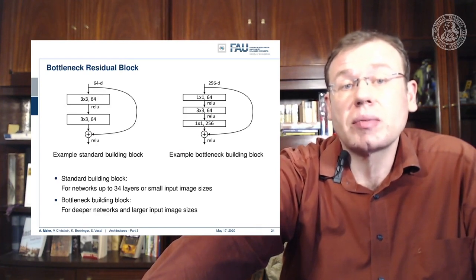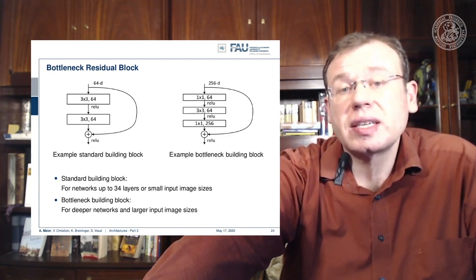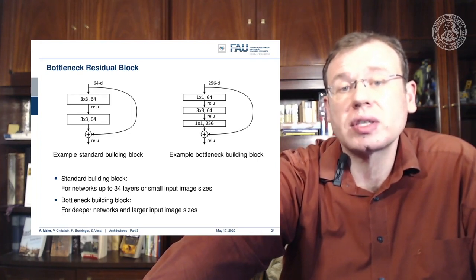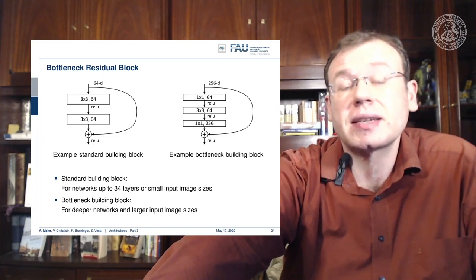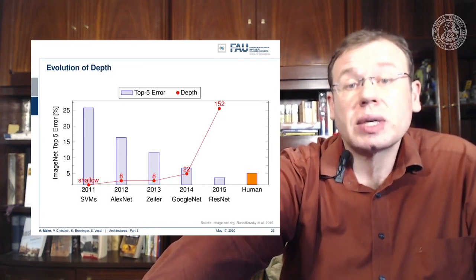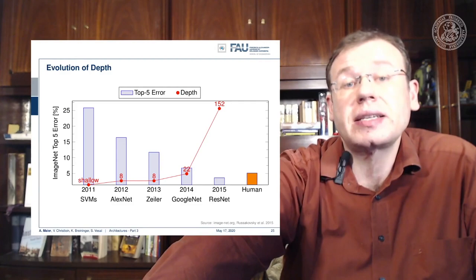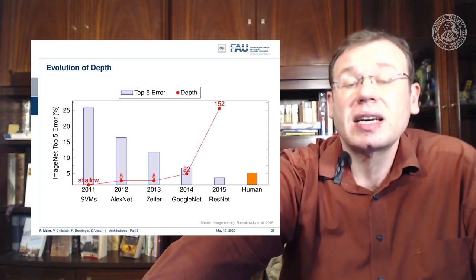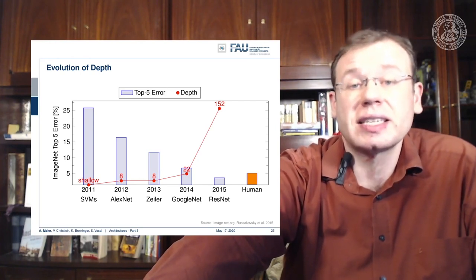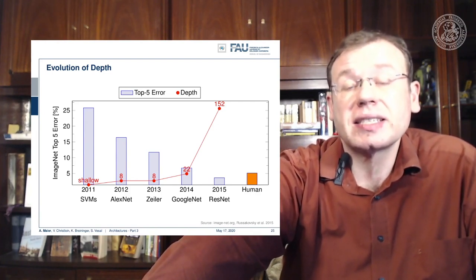There are different variants of residual block networks. There's the standard building block, and we can also use the bottleneck idea: downsample, do the convolutions, then upsample again — the bottleneck version of the residual block. Combining this with other recipes, we can train networks with 152 layers. In 2015, this produced one of the first networks that actually beat human performance. Humans are a low bar to exceed — if you only have one labeler performance estimates are lower — but we really go into the range of human performance, which is a very nice result.